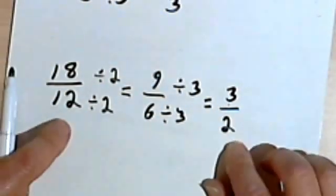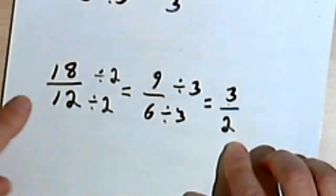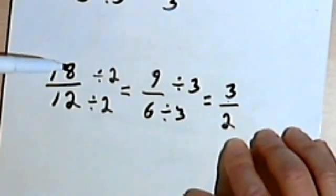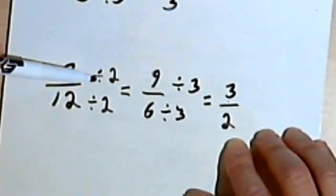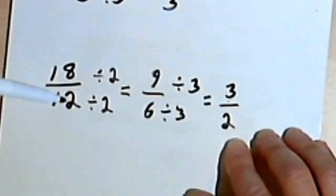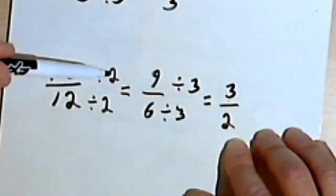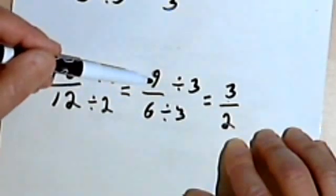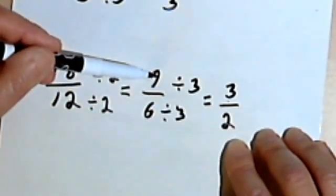I wanted to do this this way just to show you that you can reduce a fraction in steps. In other words, you can take whatever you see as a common factor, a number you can divide into both the numerator and the denominator, even if it's not the biggest number you can find. Once you've done that, look at the result and see if you can reduce it any further.